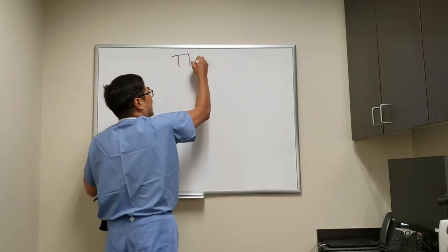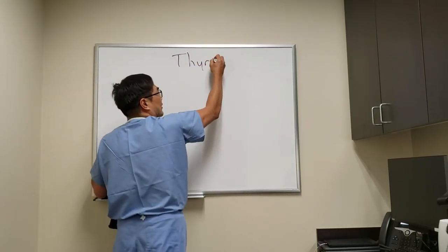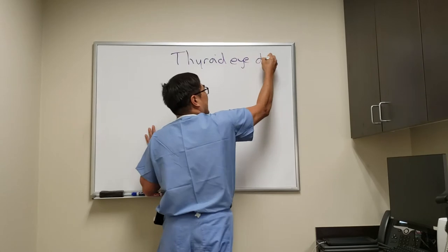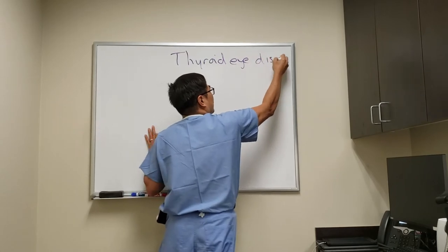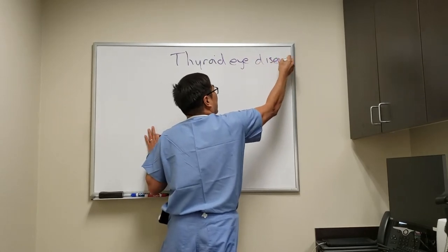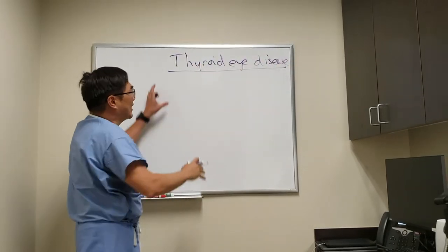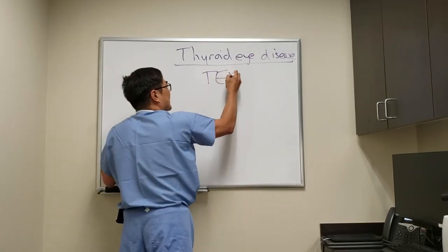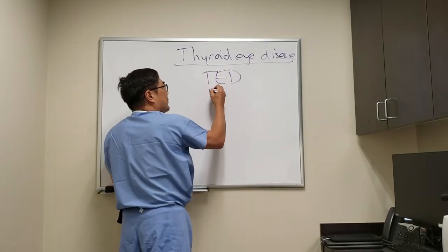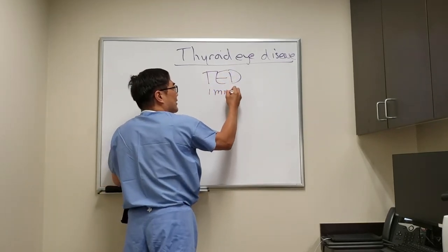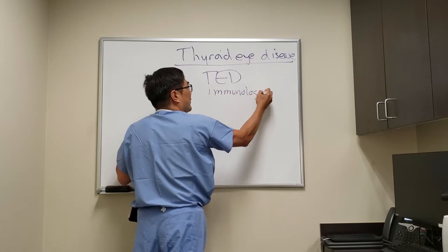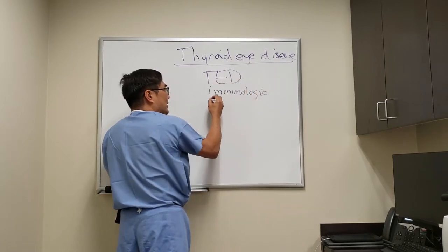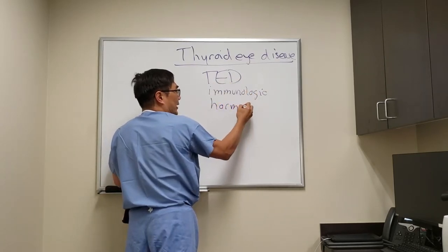I want to tell you a little bit about thyroid eye disease. There are other videos on thyroid eye disease, but today I just want to concentrate on one thing. The concept I want to emphasize about TED — thyroid eye disease — is that it's an immunologic disorder, and even though we're going to control the hormones, it's not really a hormone thing.